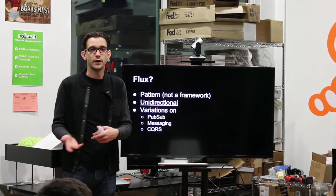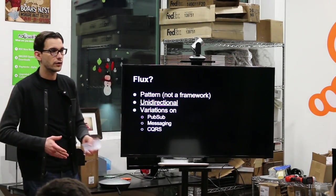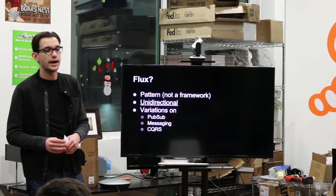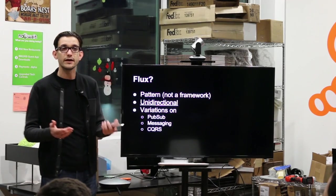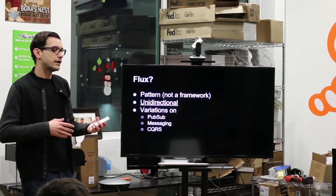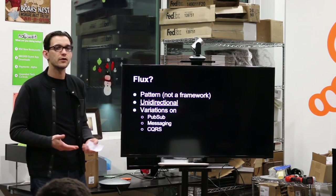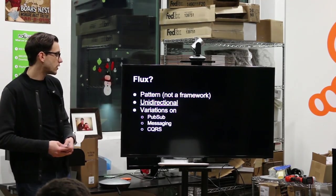And then the unidirectional part is the really, really important part about Flux. Like, the name Flux is Latin for flow. So, it's all about having one direction. And if you're doing two-way data binding and stuff like that in a way that is mutating your models, you're doing it wrong.